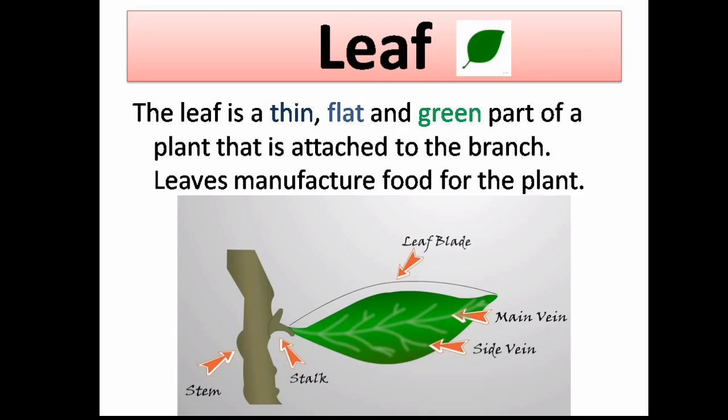The leaf is a thin, flat, and green part of a plant that is attached to the branch. Leaves manufacture food for the plant. The parts of a leaf include the leaf blade, stalk, main vein, and the side vein.